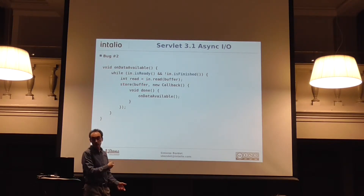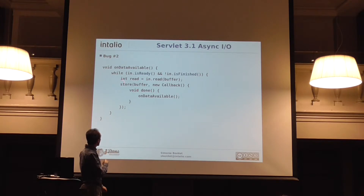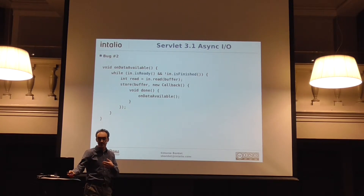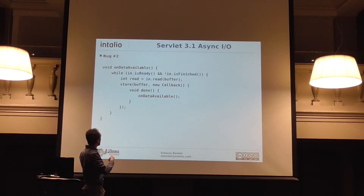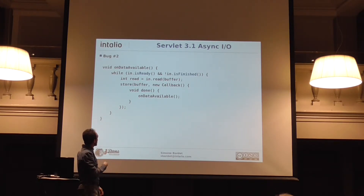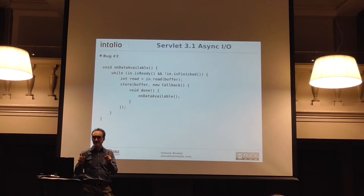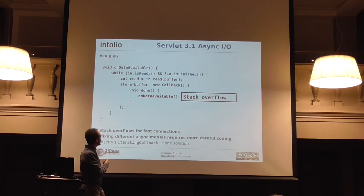What I want to show you is how complicated it gets if you use a callback-based API. The store call was a blocking one, but that doesn't work in async. So let's make an asynchronous store. While isReady and not finished, go into the store and then return — it's not really a while loop anymore. When the write is done, we need to read more, so you have to call onDataAvailable yourself, because the container doesn't call you when it's already ready. But if you do it this way, remember callback hell? The number one problem with callbacks is stack overflow. This blows up: ready, read, store — immediately stored — onDataAvailable, is ready, read, store, is ready, read, store, is ready, read, store — boom.